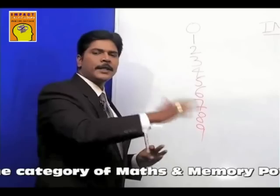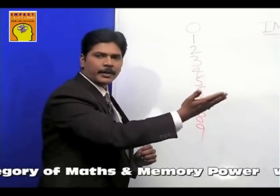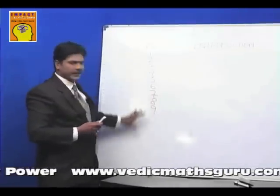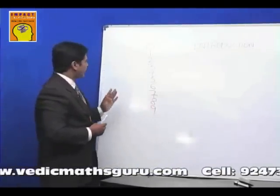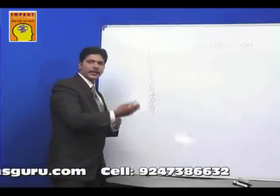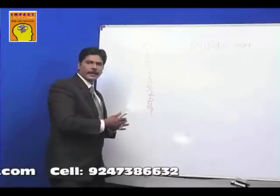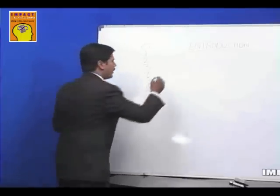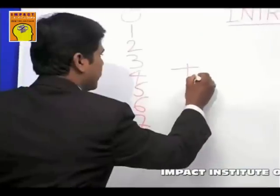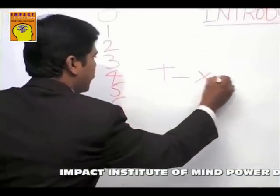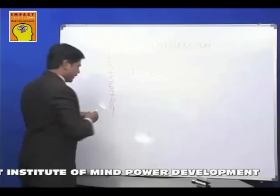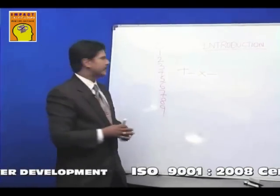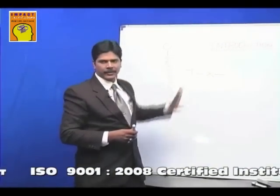Based on these digits, we can represent any number up to infinity. So they understood that there are only basically 10 digits, and mathematics deals with calculations of numbers. When it comes to calculations, there are four operations: additions, subtractions, multiplications, and divisions — and that is all about mathematics.